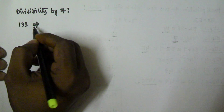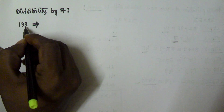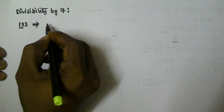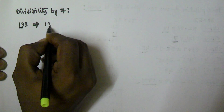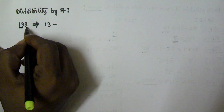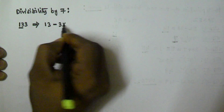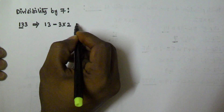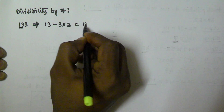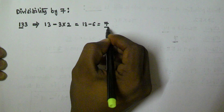To find if the number is divisible by 7, we take all the digits except the unit digit. So in 133, all the digits except the unit digit give us 13. Then we subtract the unit digit multiplied by 2 — so that is 3 multiplied by 2, which gives 6.